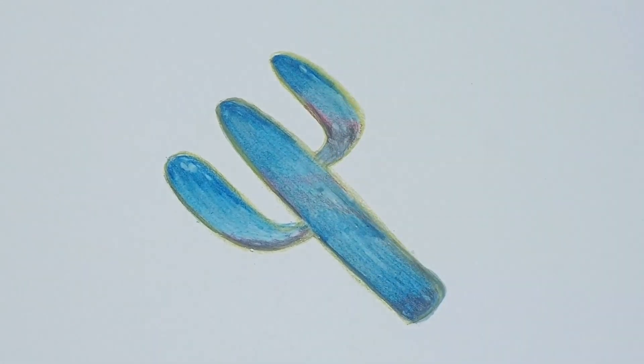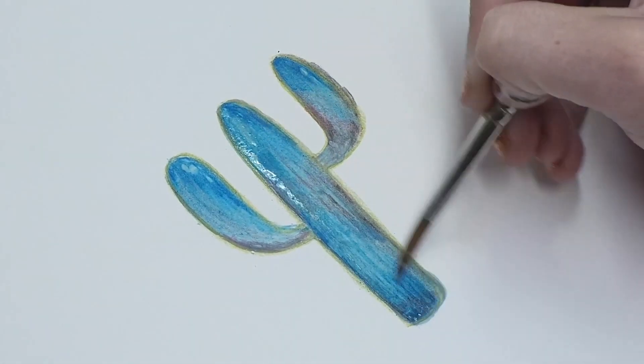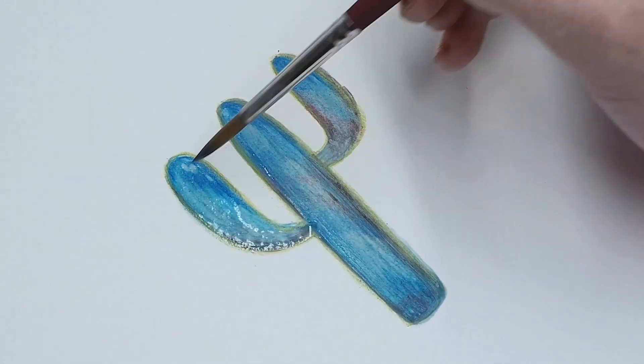The way I did that was with this heat gun, but you can just let it air dry if you don't have a heat gun. But then go back in and take your darker colors and start making more layers to create that depth in your drawing slash painting.